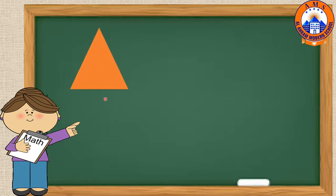What shape is it? Triangle. What is the color of this triangle? Orange. What is this shape? Heart. What is the color of this heart? Red.